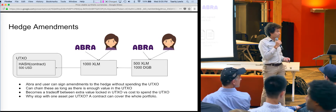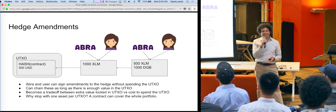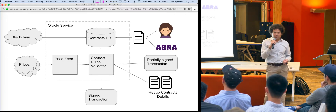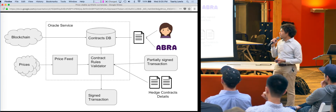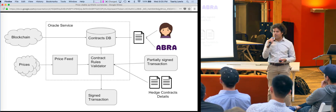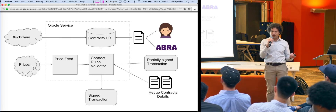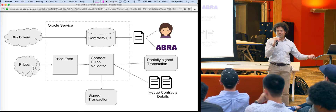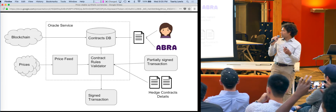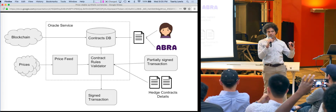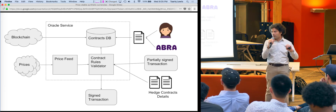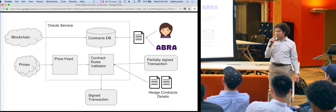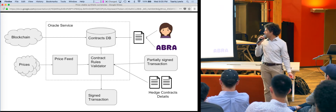So this is what the oracle service now looks like — it's a little more complicated. We need to persist some data now about the contracts. The reason is that you need to invalidate the previous contracts, otherwise someone might redeem something from the past that's worth more. You also have to check the blockchain to make sure the UTXO is valid. But other than that, it's pretty much the same.